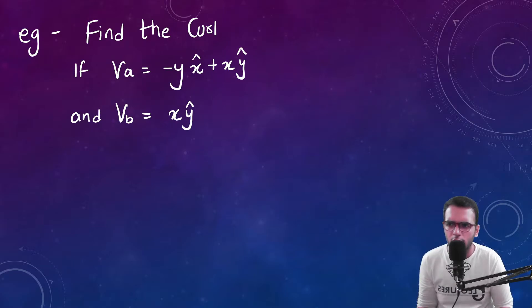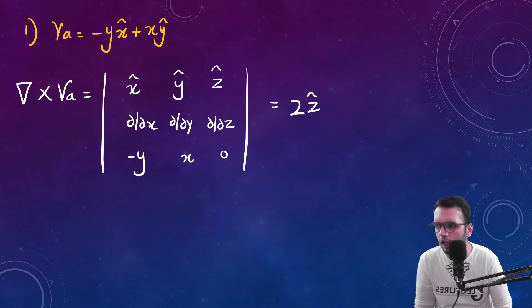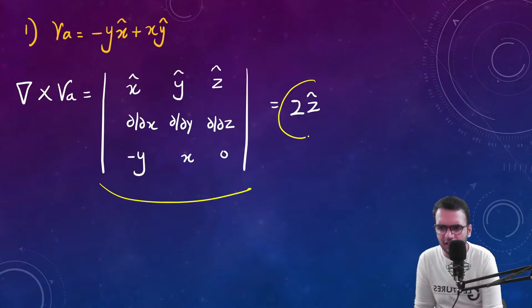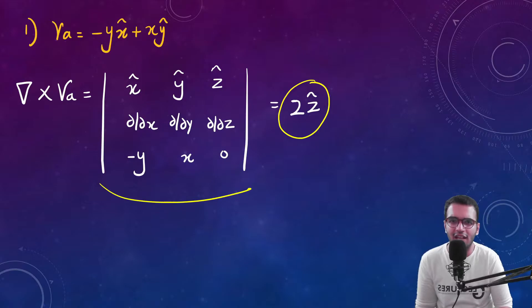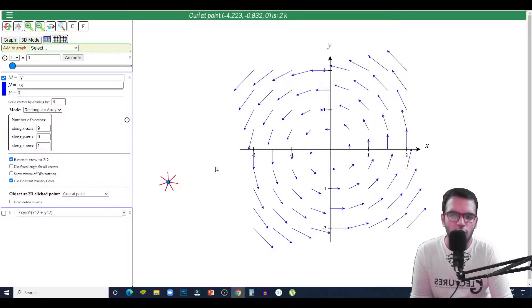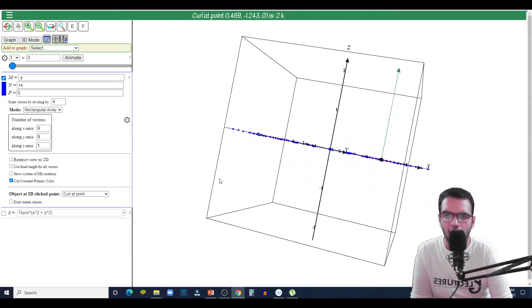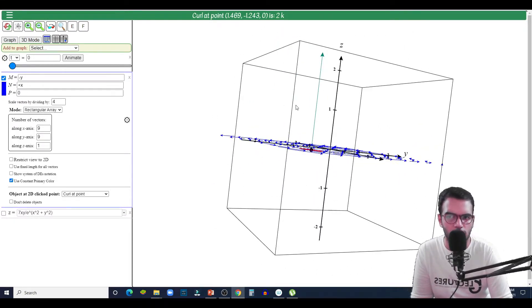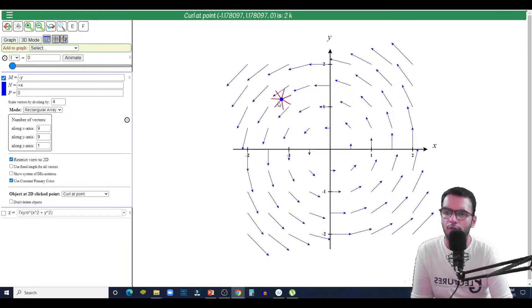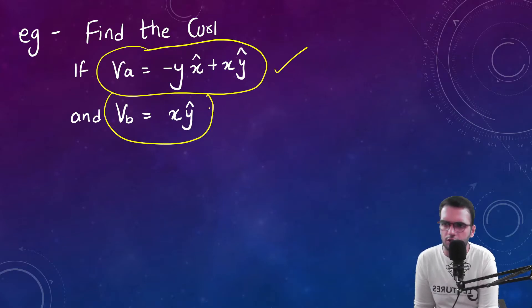Let us consider the first vector field equation and try to calculate its curl. The curl is given by the cross product formula, and the final answer is this value. I am not going into detail on the mathematics because it is straightforward. Now let us verify this by means of working models. If you see anywhere I keep my pointer, the curl is constant. The curl is not only constant but its value is also in the z-axis direction — at any point you place the pointer you will get a constant curl in this vector field.